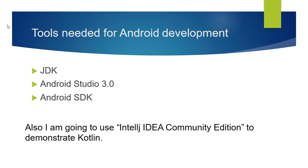I will give you the download links in the description. I will be providing two links for Android Studio — one is the stable release and another is the preview build. As of now, Android Studio 3.0 is released as a preview build, so use that one. Before downloading, check the stable build; if the stable build version is higher than 3.0, I recommend using the stable build instead of the preview build. I am going to use IntelliJ IDEA Community Edition to demonstrate Kotlin code structure, but you don't need to install it because Android Studio 3.0 itself has all the plugins needed for Kotlin development.